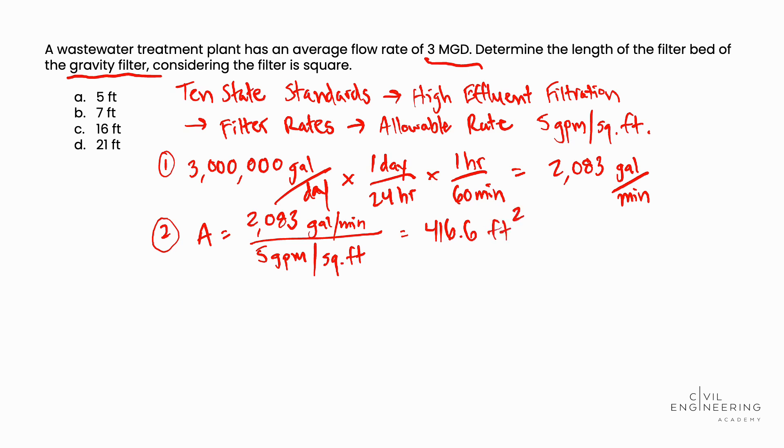Then in step 3, we calculate the side length. And so in the problem statement, we are told that the filter is square. So that means the side of the square is just the square root of the area. So the area we found in step 2 is 416.6 square feet. We take the square root of that, and we determine the side length to be 20.411 feet.